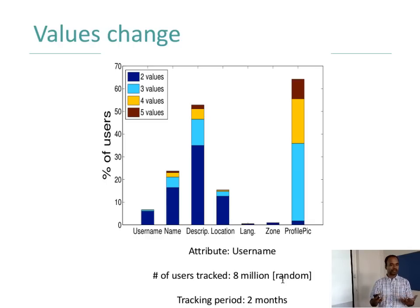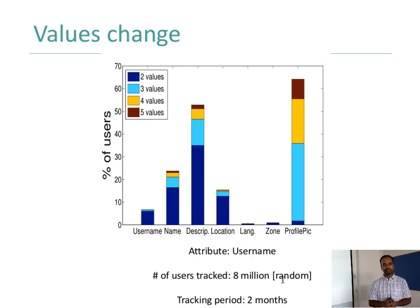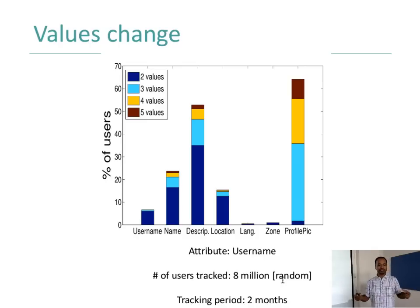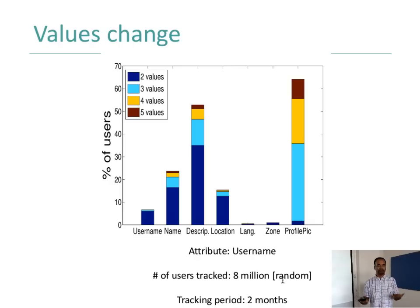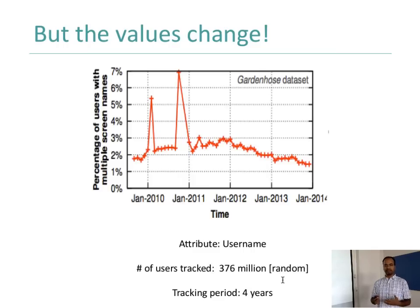In my case I probably change my profile picture once a year or once in a year and a half, but I have seen many people change it pretty often. Similarly for name, people have changed names. About 35 percent of people are changing their description — saying 'Professor at IIIT Delhi' — at least twice in the data that was collected. Very few people change language or time zone. Slides 11 and 12 basically show the change in information in the account.